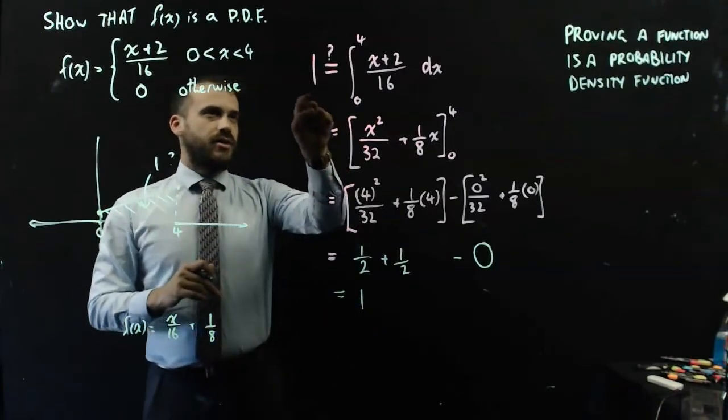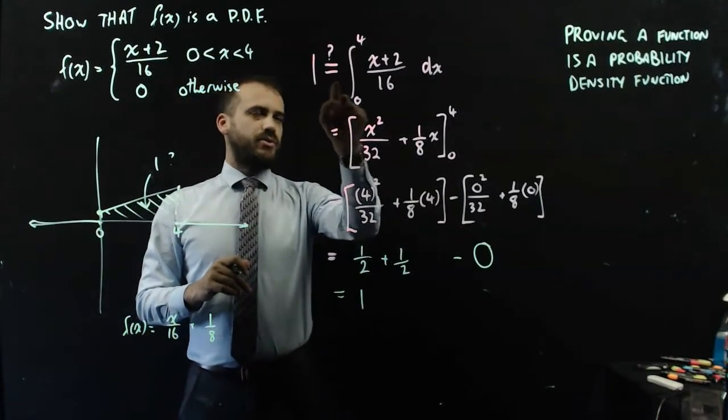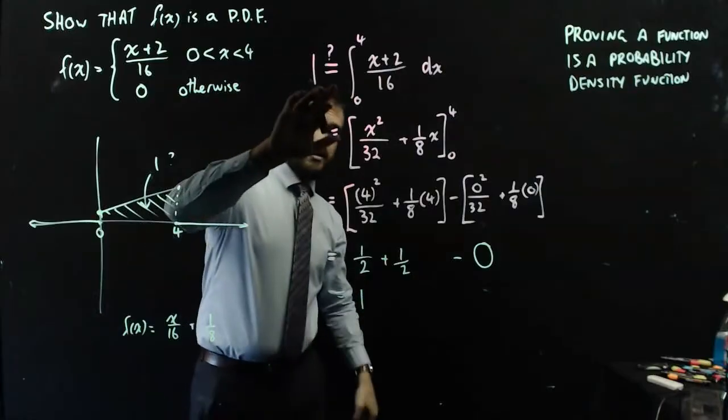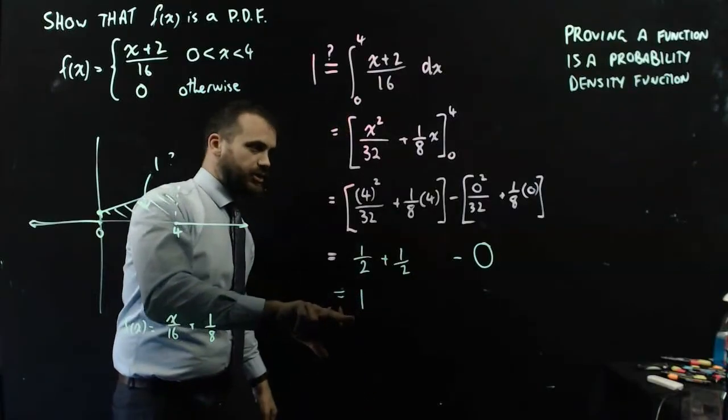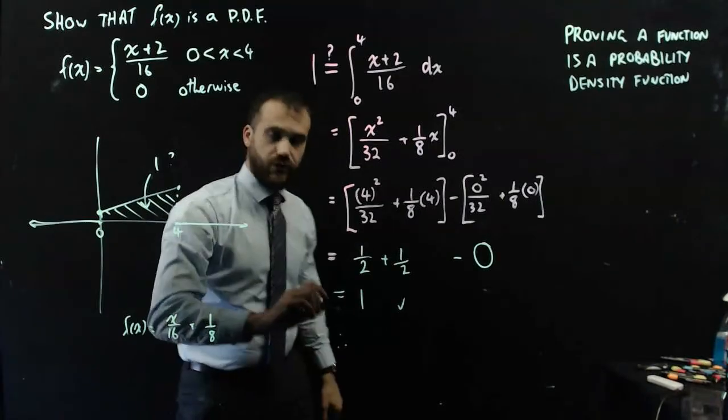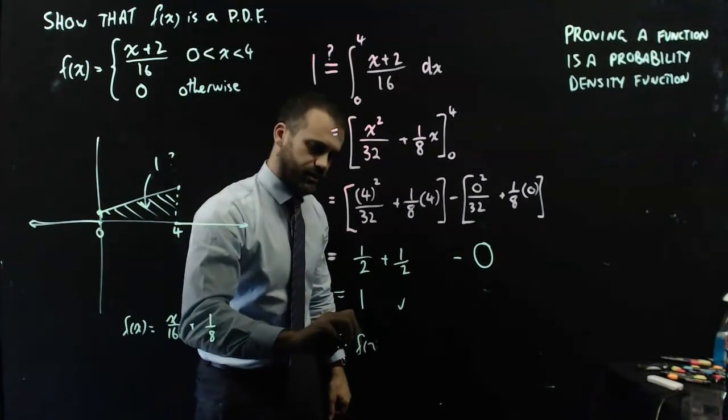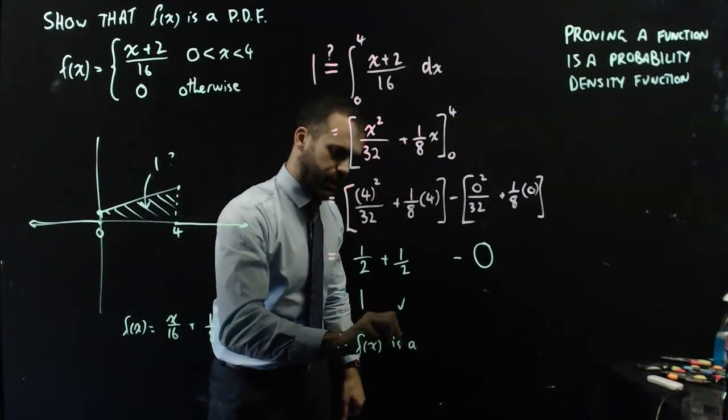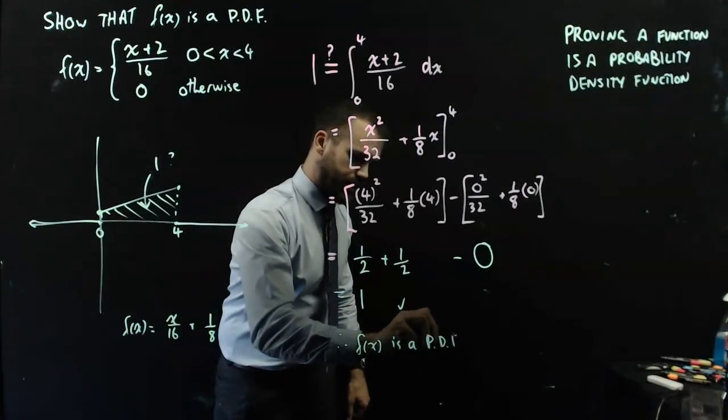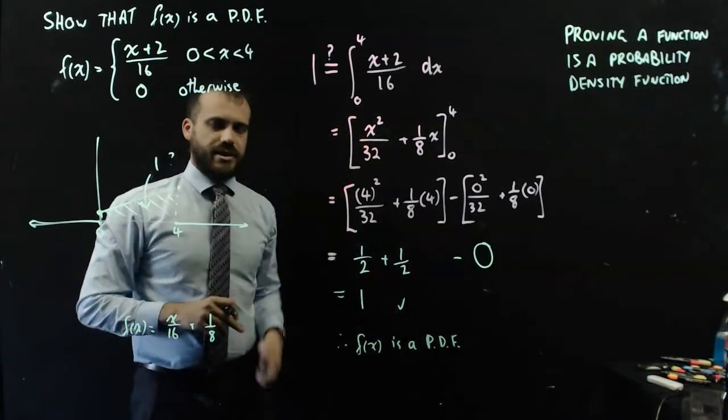Ha! Done. So, up the top I had 1 equals this, question mark, and now I can show that, actually, it does. Therefore, f of x is a PDF, a probability density function.